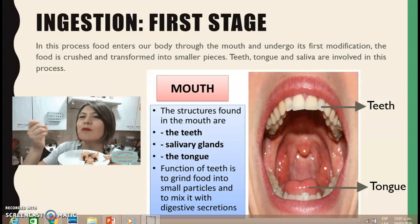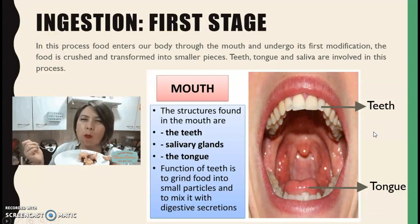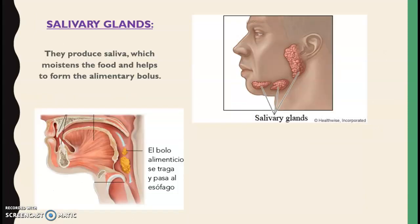The teeth cut the food and make it much smaller. The tongue moves and manipulates the food to mix it with saliva. Saliva moistens the food to facilitate its passage from the mouth to the next organ, which is the esophagus. That mixture formed in the mouth — resulting from the crushing by the teeth and moistening by saliva — is called the alimentary bolus, or bolo alimenticio: the mixture of crushed food with saliva.